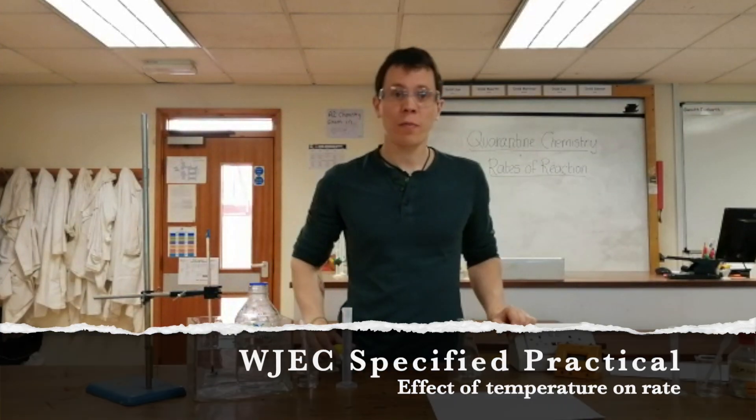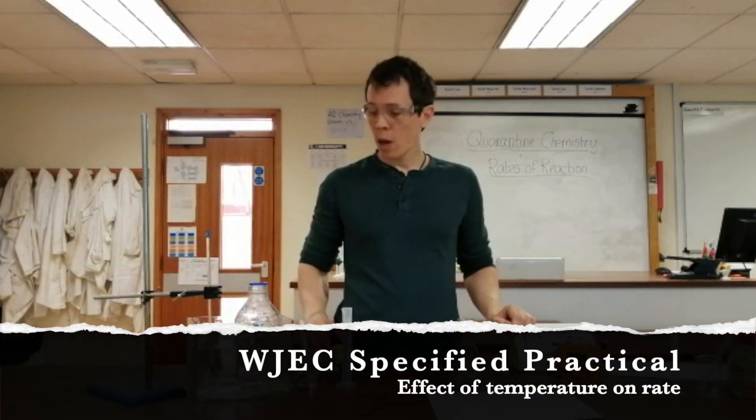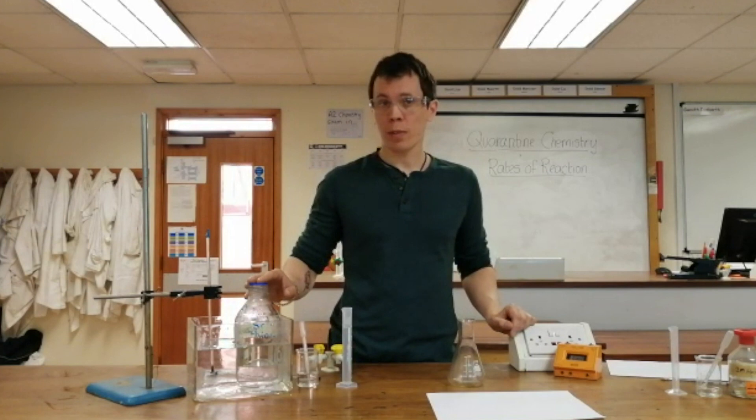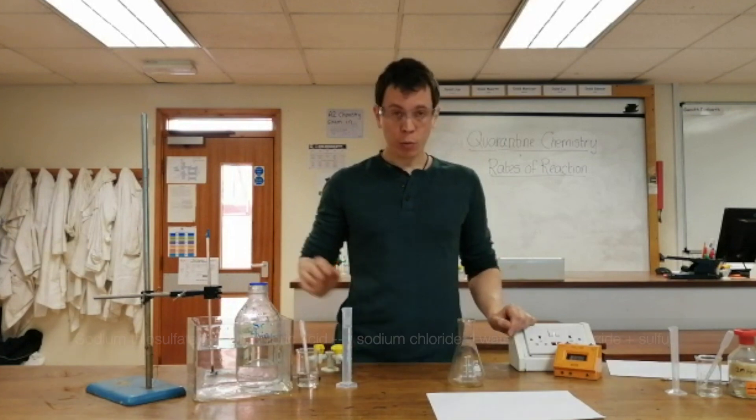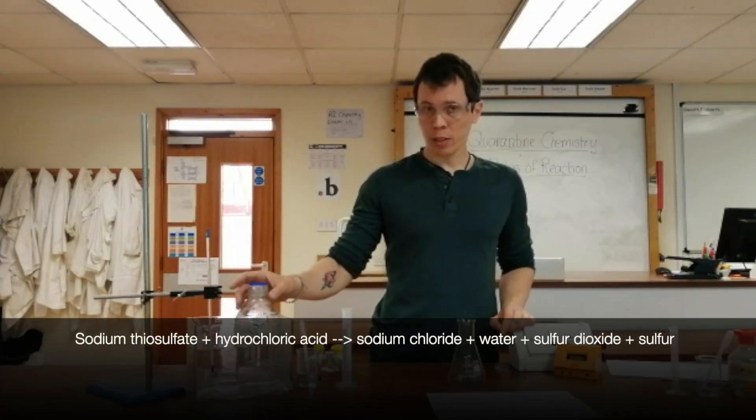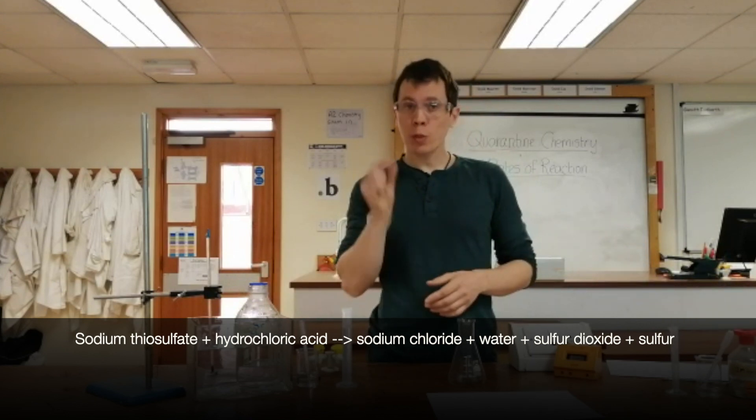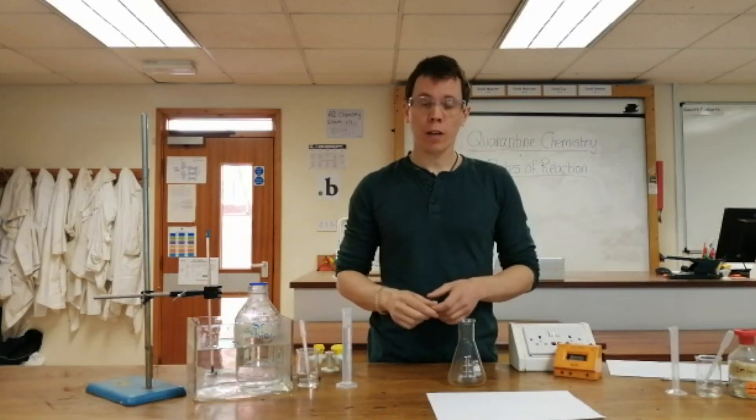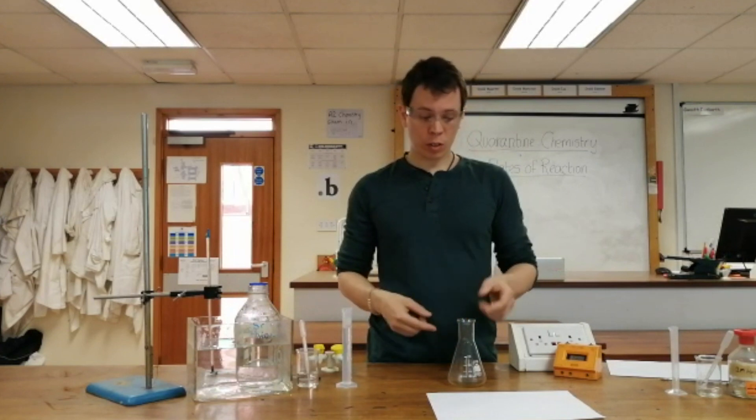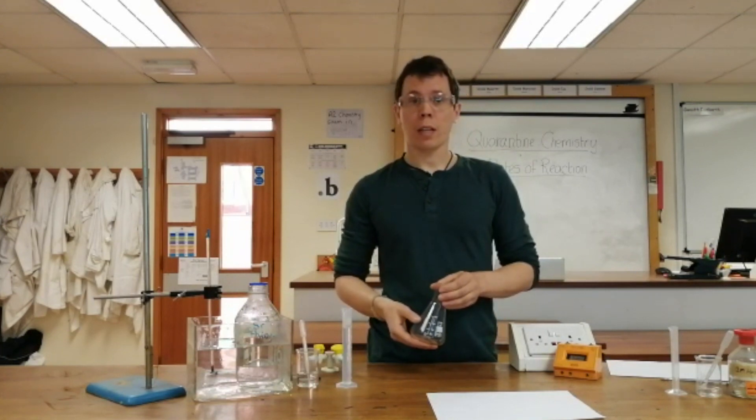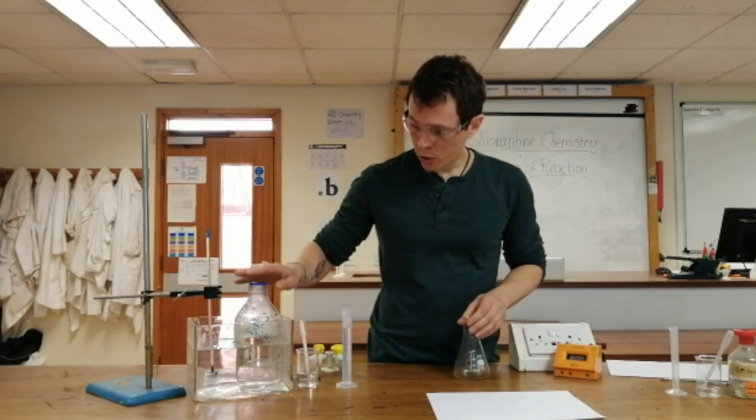In this experiment, we're going to investigate rates of reaction by changing the temperature of sodium thiosulfate solution. The reaction is between sodium thiosulfate and hydrochloric acid. When the two react, they form small solid particles of sulfur, which makes the mixture become cloudy. I've got my sodium thiosulfate in a hot water bath at about 60 degrees.